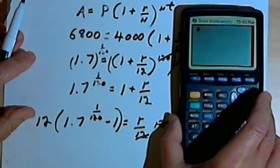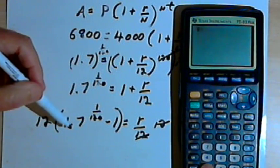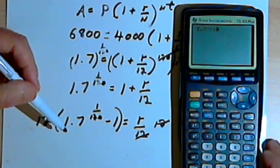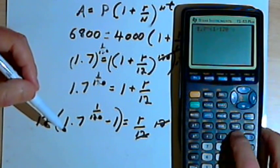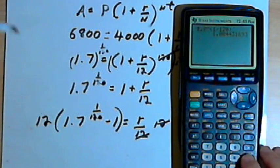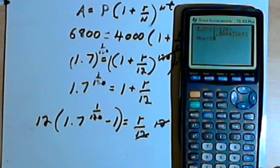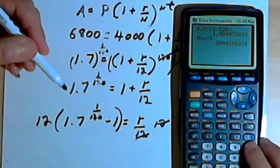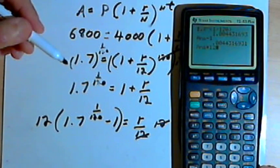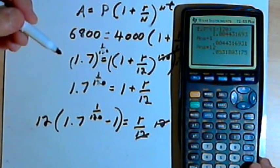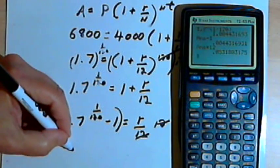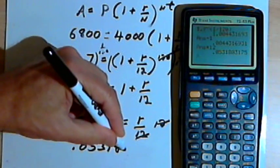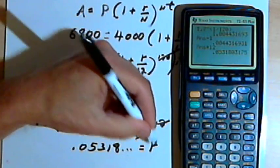Okay, time for the calculator again. First I'll do 1.7 raised to the 1 divided by 120. I'll subtract 1 from that. And now I want to take that, that's everything here in parentheses, and multiply it by 12. And what I end up with here is 0.05318 for r.